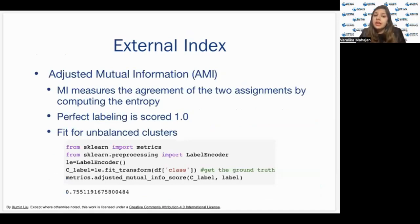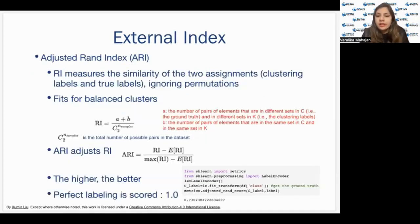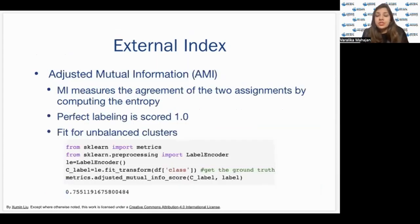Similarly, we have another method, which is the adjusted mutual information. I would like to go back and tell you, you can also do it evaluated using python by directly calling the metrics library from sklearn and calling metrics.adjusted RAND score and it will tell you the score for your clustering. Okay, the second method was adjusted mutual information, AMI. Now, what is this? MI basically measures the agreement of the two assignments by computing the entropy. Now, this one uses entropy. Again, however, the fundamentals are the same. Perfect labeling score is one and this can help us to identify a good fit for an unbalanced cluster data. Over here, you can see, similarly, we can call metrics.adjusted mutual info score and our clustering labels and the original labels which are the ground truth and we'll get the score over here.